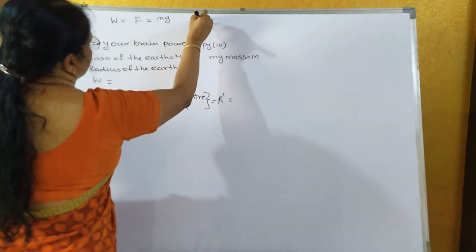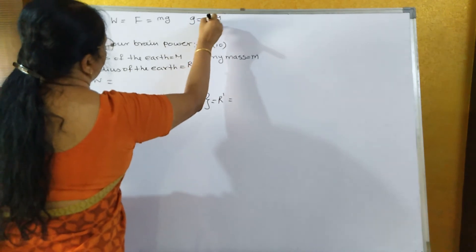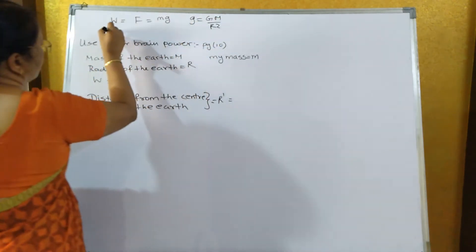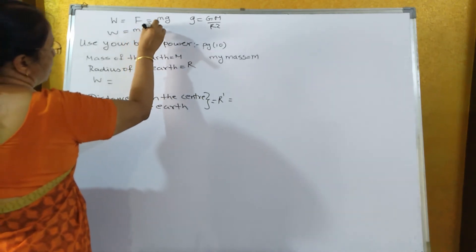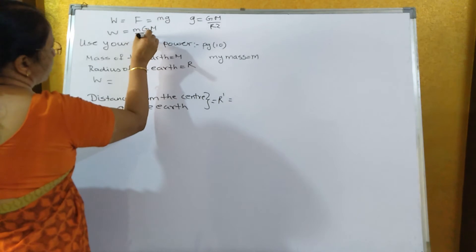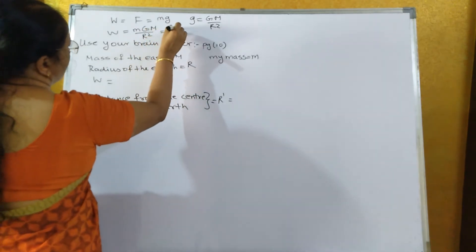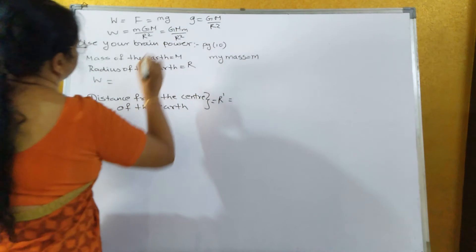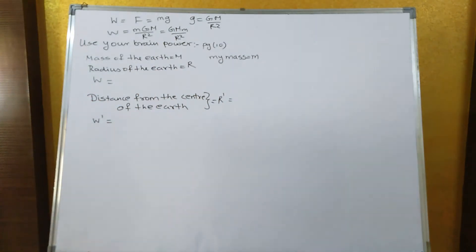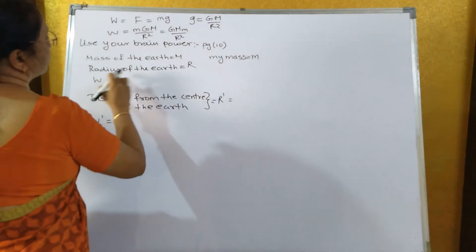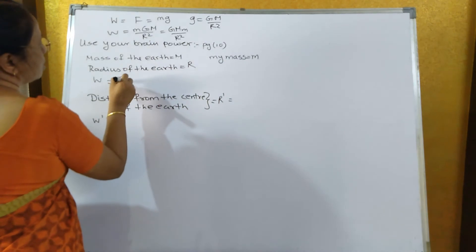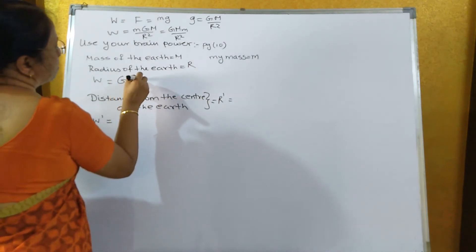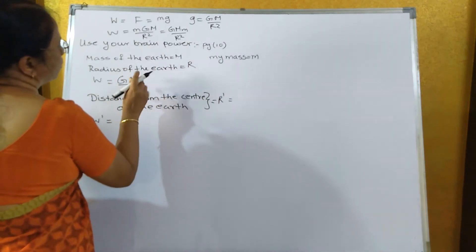What is g here? g is equal to GM upon r squared. Therefore w becomes m into GM upon r squared, which equals GMm upon r squared. Now, on page number 10: if the mass of the earth is M and radius of the earth is r, then w equals GMm upon r squared, where small m is your mass.